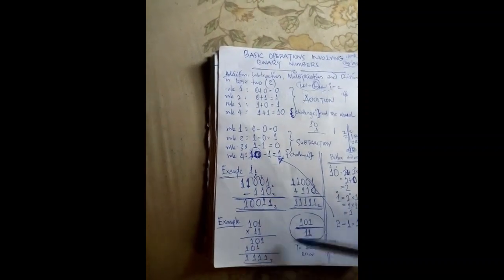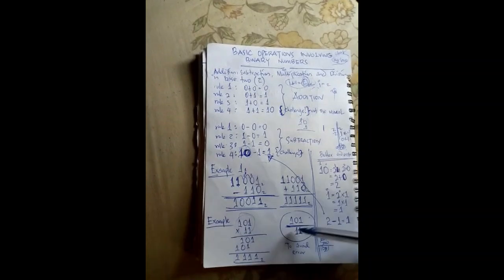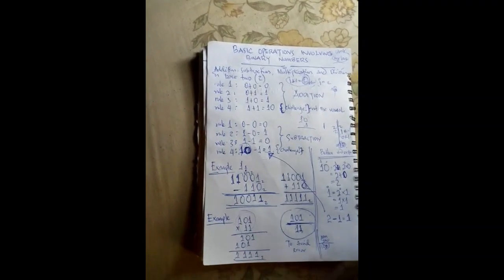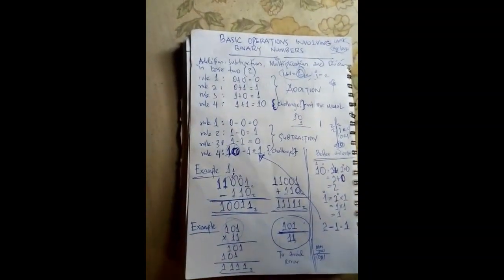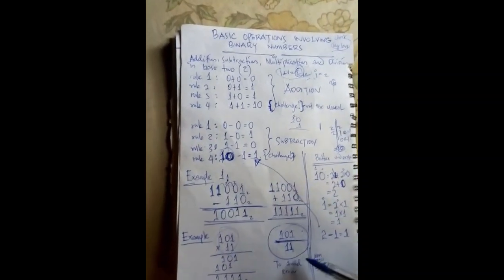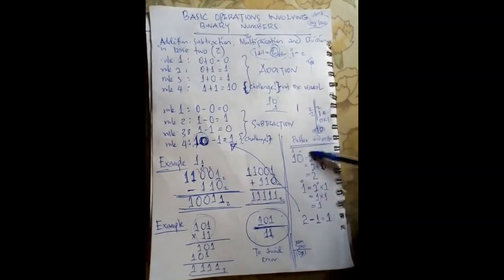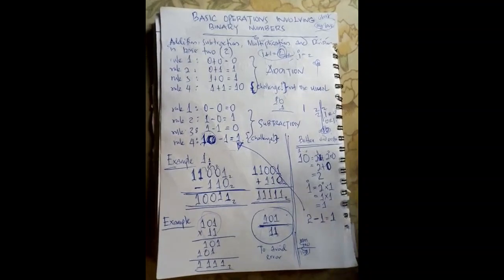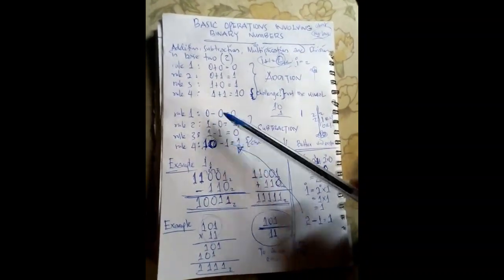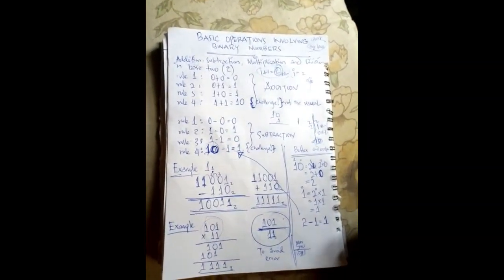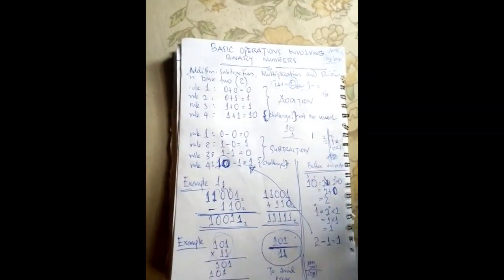Coming to division — let's say we want to divide one zero one by eleven. You can't actually divide directly in base two; you might get confused and get wrong answers. What we do is we normally convert back to base ten numbers before we divide. I'll show you how that is done. You can also do addition and subtraction this way, but that wastes time, and in an exam condition you don't want to waste time.